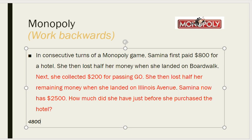She has 4800. She collected 200 to make 5000. She has 5000. If we have 4800 and go forward adding 200 that gives us 5000, our calculation is correct.